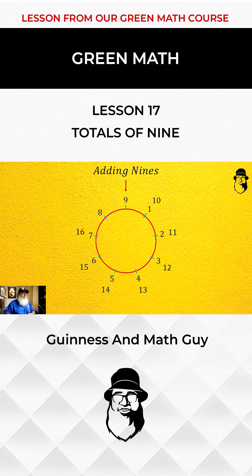Now, because there are 9 steps around the circle, if we count on 9 from any point, we will come back to where we started.